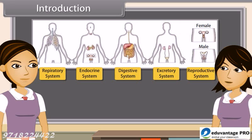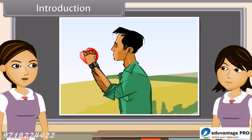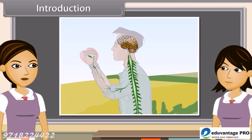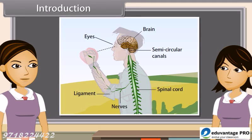In other words, all the organs of a system coordinate with each other so that the system can work properly. Coordination is the working together of the various organs in a systematic manner, so as to produce a proper reaction to the stimulus.